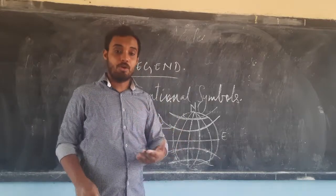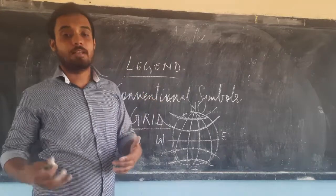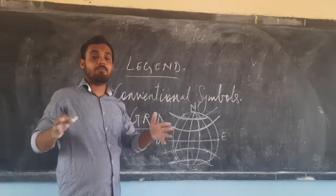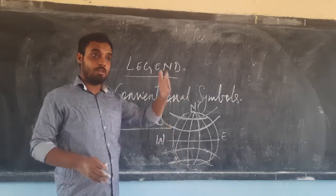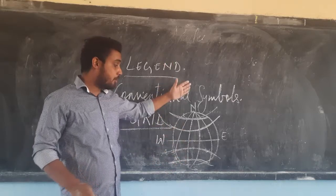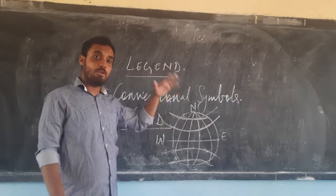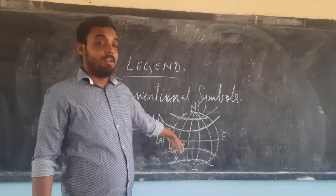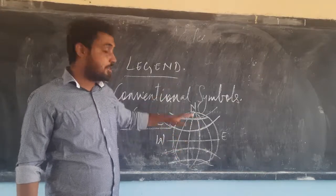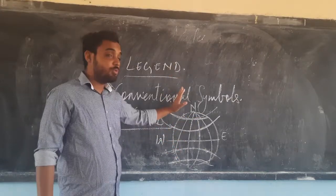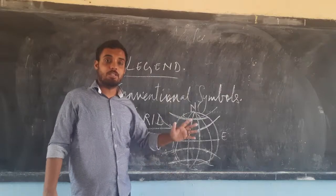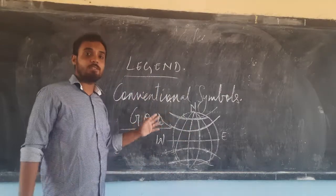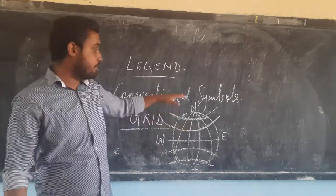Latitude simply means flat — 'lat' means flat. Longitudes are the long ones — from north pole to south pole. Latitudes are the horizontal lines; longitudes are the vertical lines. Vertical means standing straight; horizontal means lying on the plane — flat.